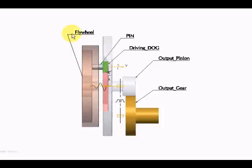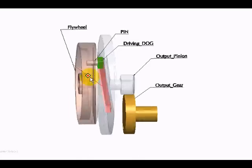Hello. We see a mechanism that contains a flywheel, a pin, a driving dog, an output pinion and an output gear.